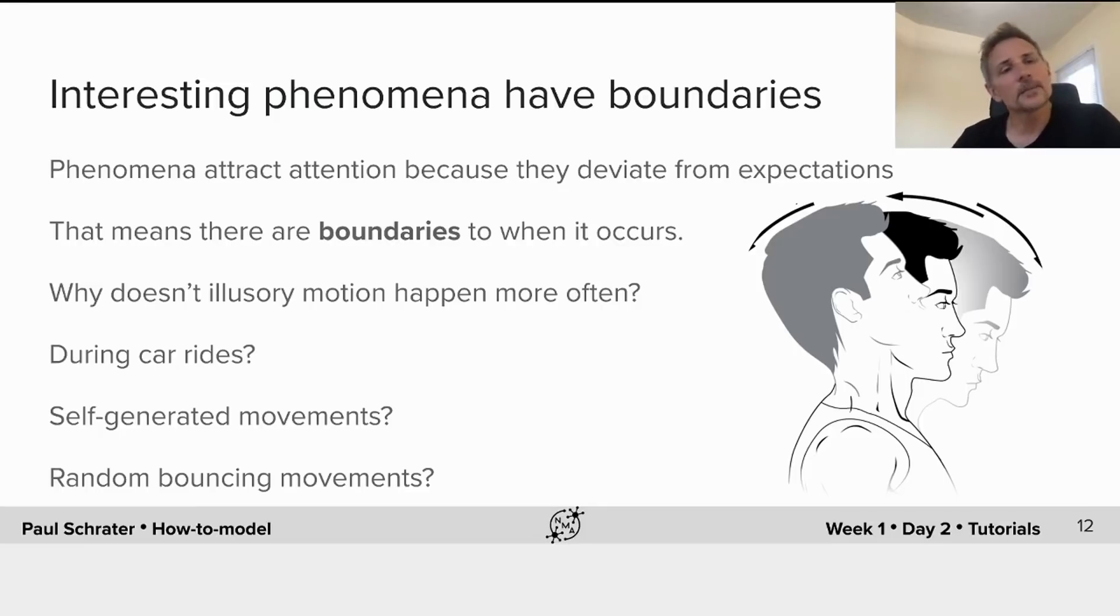Interesting phenomena have boundaries. For a phenomena to attract attention, it's exactly because it deviates from expectations. It means that when you see something that is of scientific interest, almost always there will be a range of conditions under which it occurs and which it doesn't occur.